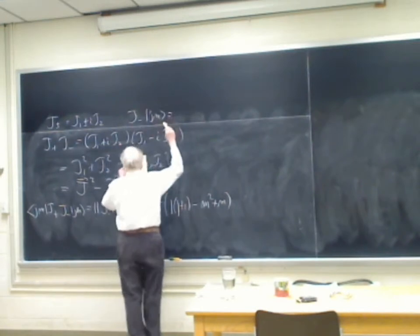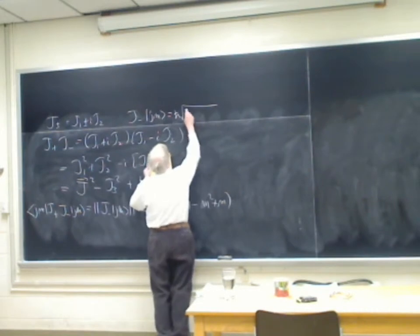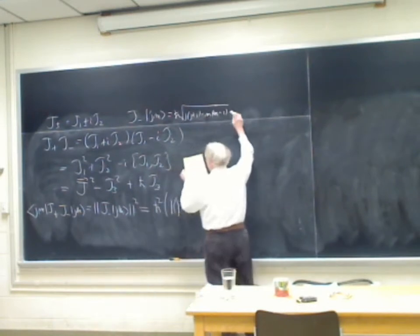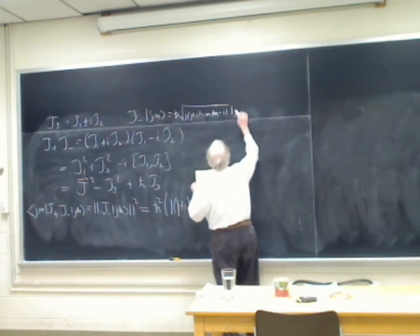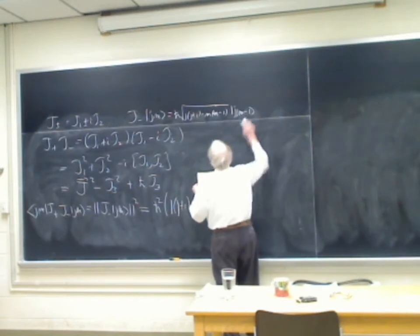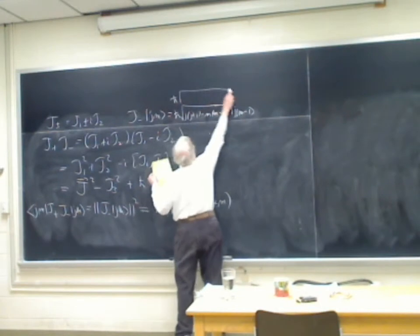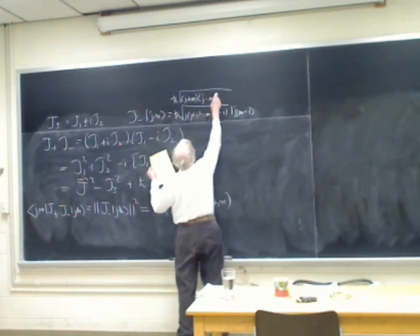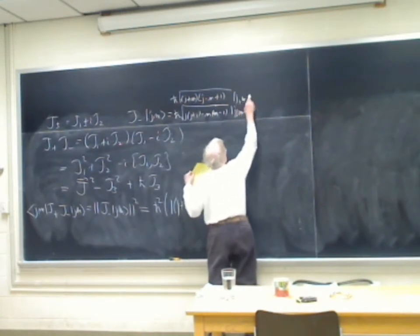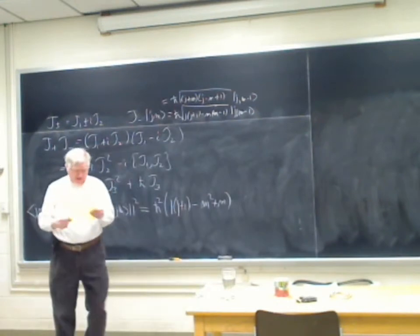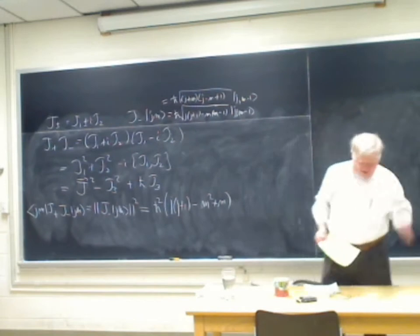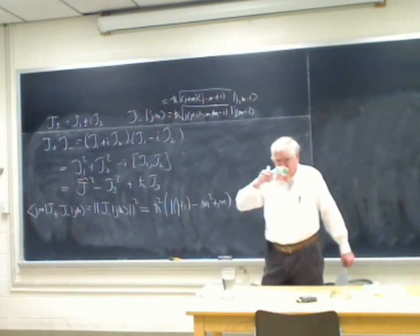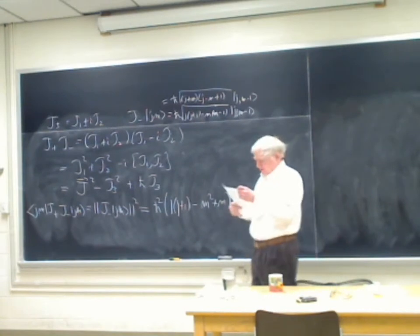Taking the matrix element in the state |jm⟩, which is the norm of j₋|jm⟩ squared, what we get is simply ℏ² times j(j+1) minus m² plus m. And so j₋|jm⟩ = ℏ√(j(j+1) - m(m-1)) |j, m-1⟩, which is also √((j+m)(j-m+1)) |j, m-1⟩. That's how you remember the norm — it's not mysterious, you can derive it that way.